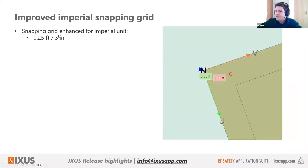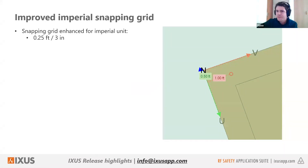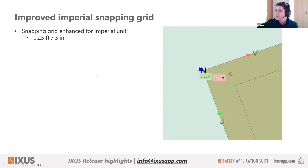The next enhancement is the snapping grid for imperial units. Previously this was locked to a meter grid of 0.1 meters, which is not a clean conversion in feet and inches. Now it is a 0.25 feet snapping grid, which will make it much easier to work in imperial units in the modeler.